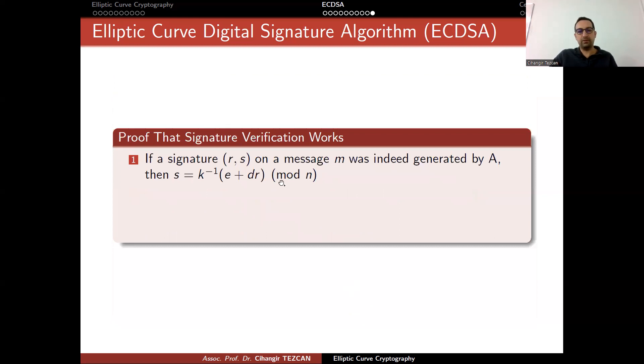Here, why the verification works. If a signature (r,s) on a message m was indeed generated by a, then s equals to this value, because this is how a calculated it with their secret key. Rearranging these values gives actually, you know, multiply both sides with k and then send it also multiplied with s inverse. First, you end up with k is equal to s inverse times this.